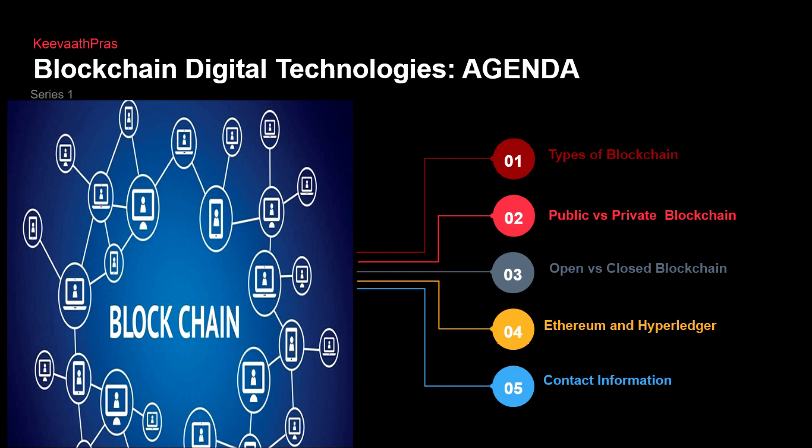You guys might have heard of Ethereum, the crypto coin. At the time I'm speaking it is around fifteen hundred dollars, and I think it went close up to twenty-eight hundred dollars before the crypto crash. We are going to be seeing what Ethereum is and what Hyperledger is, and likewise the contract information.